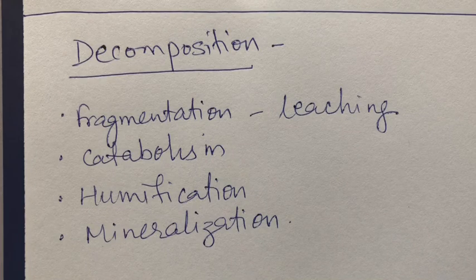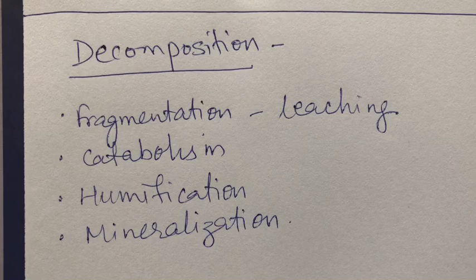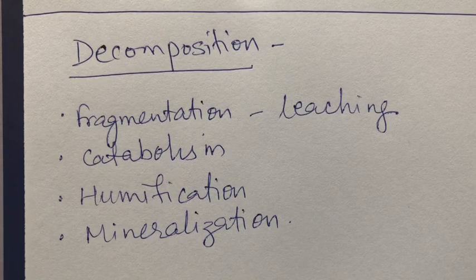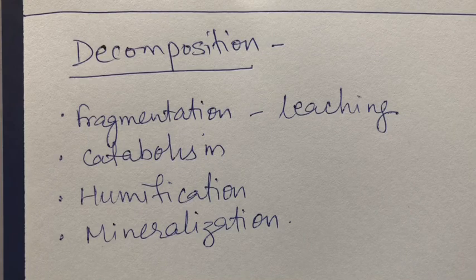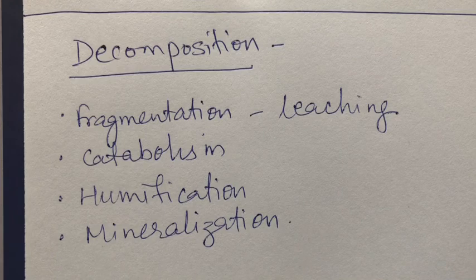In humification, invertebrates eat the detritus, and as the organic matter passes through their alimentary canal, it is broken down into an amorphous, dark-colored substance called humus. Humus is resistant to microbial action and decomposes very slowly. Being colloidal in nature, it serves as a reservoir of nutrients.